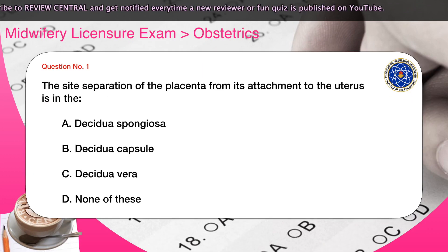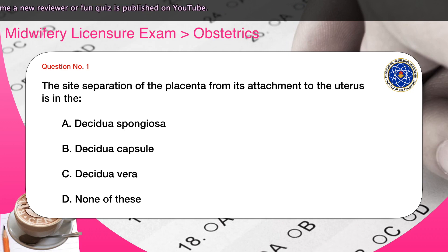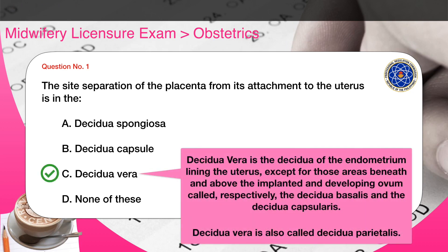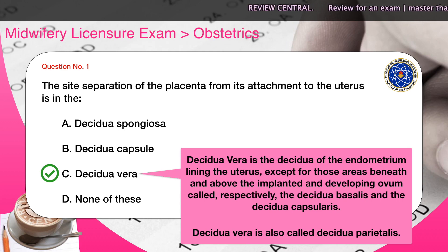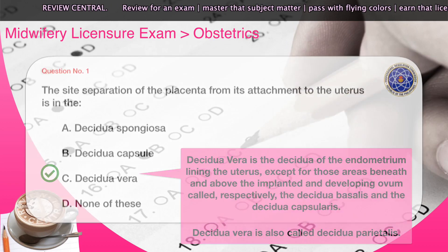Question number one: The site of separation of the placenta from its attachment to the uterus is in the — A) decidua spongiosa, B) decidua capsularis, C) decidua vera, D) none of these. The correct answer is C. Decidua vera is the decidua of the endometrium lining the uterus except for areas beneath and above the implanted and developing ovum, called respectively the decidua basalis and the decidua capsularis. Decidua vera is also called decidua parietalis.